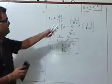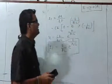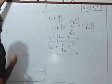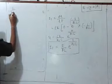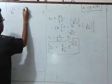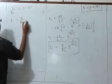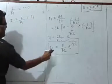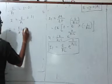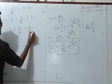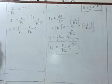Now using the equation E equals (I minus I1) R1, we get I equals E upon R1 plus I1. Substituting the expression for I1, we get: I equals E upon R1 plus E upon R2 into e raised to minus t upon R2 C.